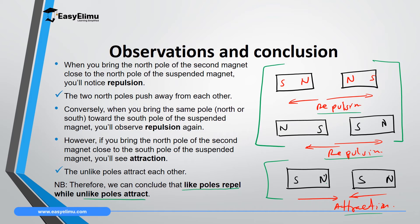When asked to verify the basic law of magnetism, first list the apparatus: two magnets, a thread, clamp, boss and stand. Then suspend one magnet so it swings freely. Bring another magnet's north pole to the north pole — observe repulsion. South pole to south pole — observe repulsion. North pole to south pole — observe attraction. Conclude: like poles repel while unlike poles attract. This is one of the most important laws in science and physics in particular.